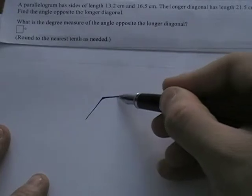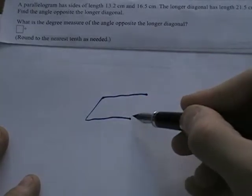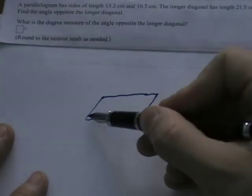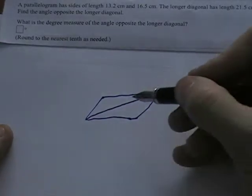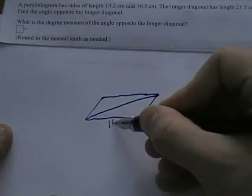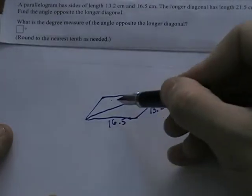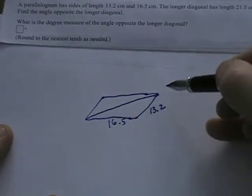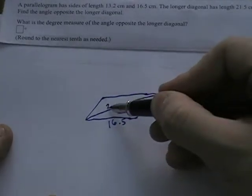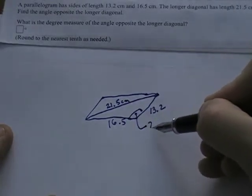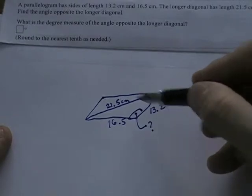So they give me sides of a parallelogram. I'm just going to go ahead and draw a parallelogram. They give me this parallelogram and they tell me that the sides are 13.2, 16.5, and the diagonal, the long diagonal, because there'll be a short diagonal this way, but the long diagonal is 21.5 centimeters and they want me to find the angle across from the long diagonal.